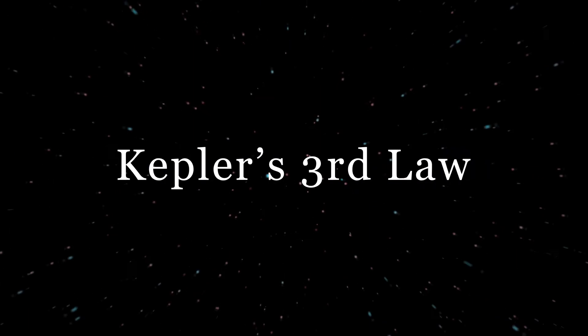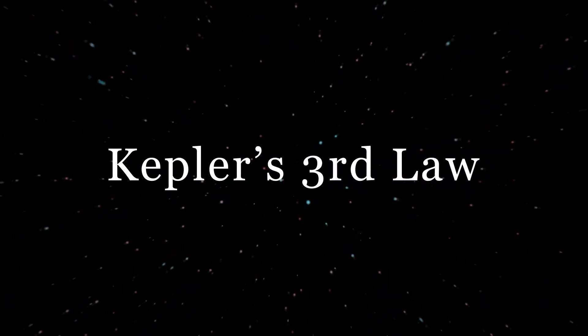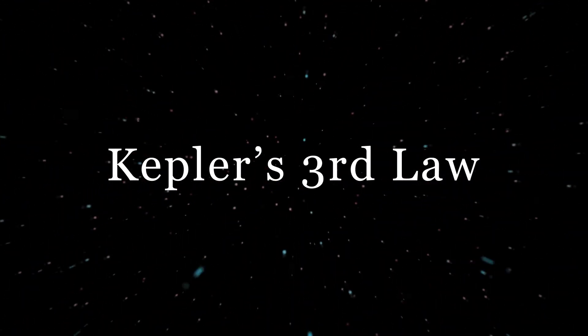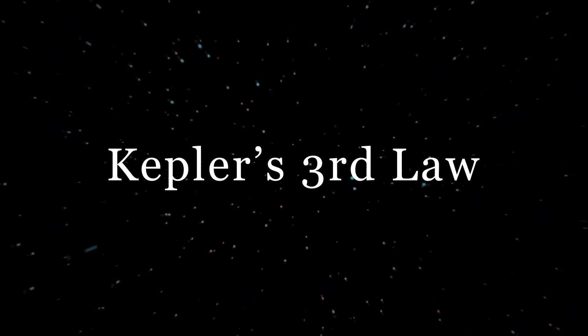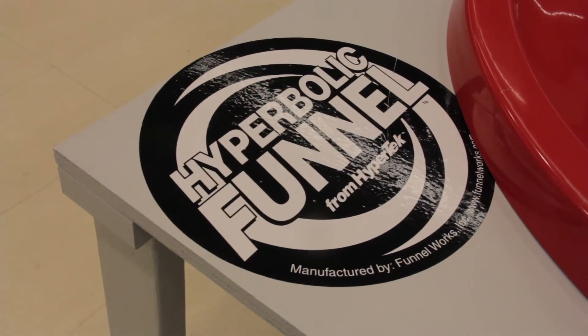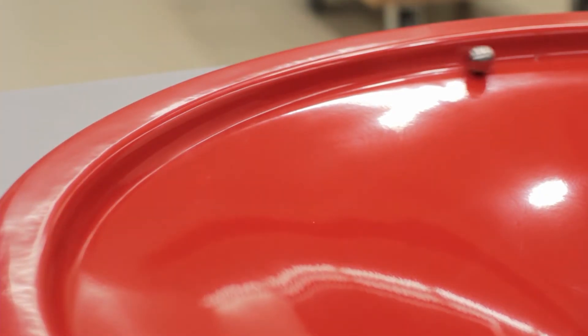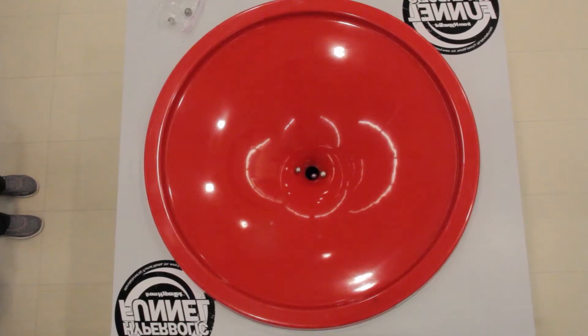This video will explore the relationship between a planet's orbital velocity, and thus its period, and its distance from the Sun in our solar system. It will make use of a hyperbolic funnel and steel balls to play the role of planets. Note that the curvature of the funnel's surface is a proxy for gravity. You can picture the Sun as the hole, and observe that the curvature increases as you get closer to the hole, just as gravity increases as you get closer to the Sun.